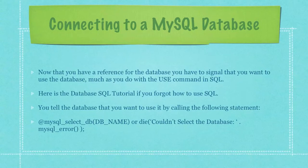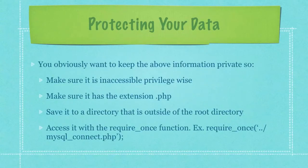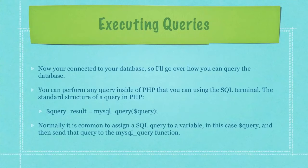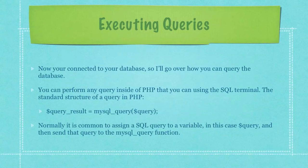You tell the database that you want to use it by calling the following statement: the at symbol followed by mysql_select_db, followed by the database name, with a conditional that will print to the screen if an error occurred. You obviously want to keep the above connection information private, so make sure it is inaccessible privilege-wise, has the extension .php, is saved to a directory outside of the root directory, and is accessed with the require_once function. Now that you are connected to your database, you can perform any query inside of PHP that you can using the SQL terminal. The standard structure of a query in PHP is: whatever variable name you want for your query result, followed by equals, then mysql_query, and then whatever your query would be. It is common to assign an SQL query to a variable — in this case named query — and then send that query to the mysql_query function.